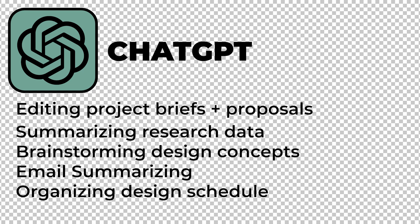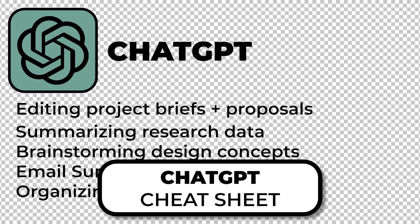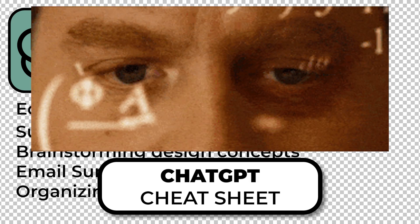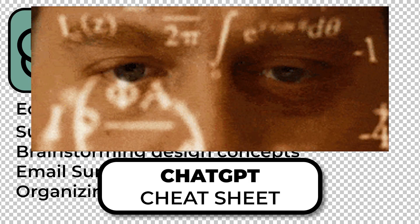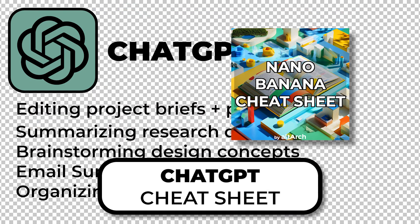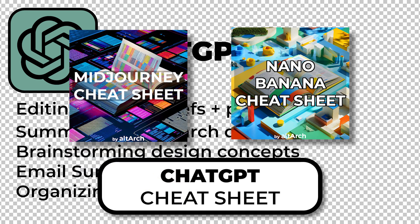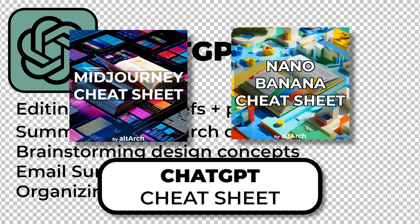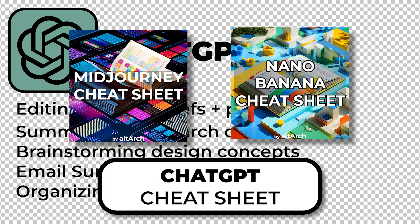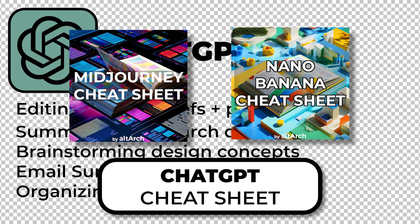You can do all of this yourself with the ChatGPT cheat sheet, which is geared towards architecture students and architecture professionals. Combine this with the Nano Banana and Midjourney cheat sheets, and all of a sudden you're working 10 times faster than everyone else who is still doing it manually.